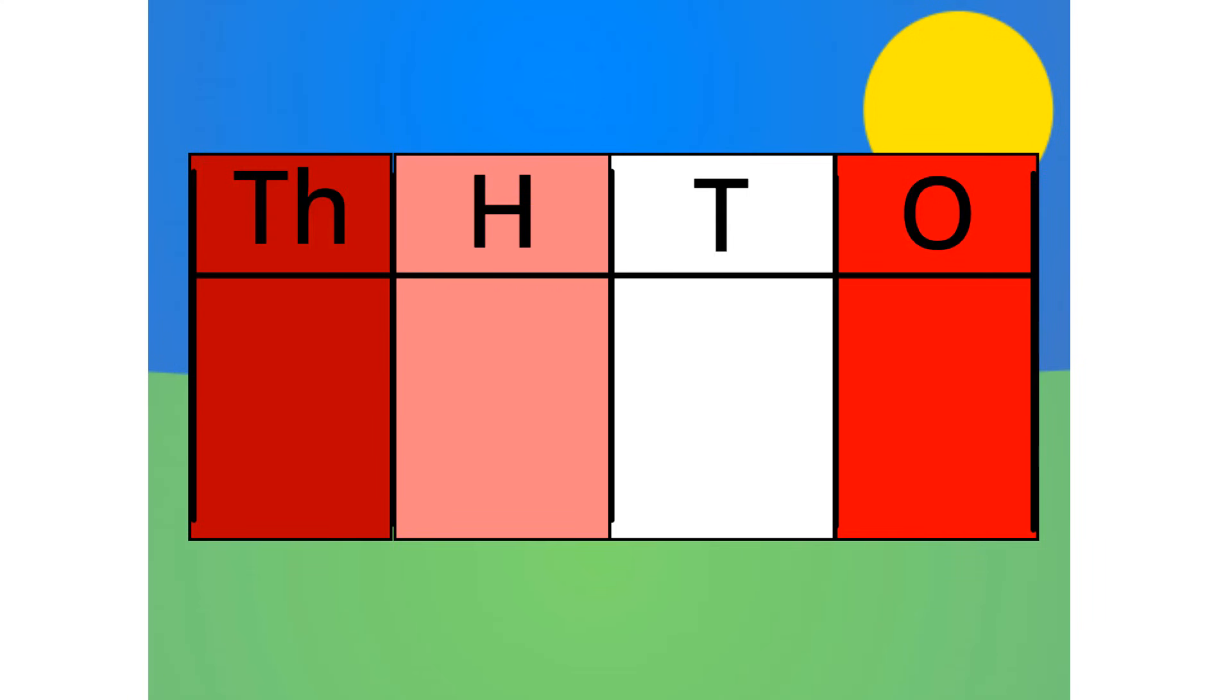Do you notice anything with this table? Correct. The number multiplies by 10 each time it goes left one column. Because it multiplies by 10 each time, we call this system base 10.